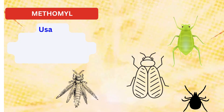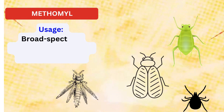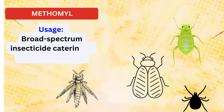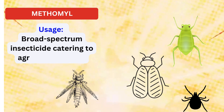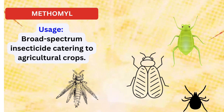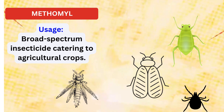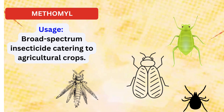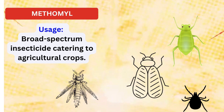Best uses. Methomyl is a broad-spectrum insecticide. It is also used as an acaricide to control ticks and spiders. It is used for foliar treatment of vegetables, fruit, and field crops, cotton, commercial ornamentals, and in and around poultry houses and dairies. It is also used as a fly bait.